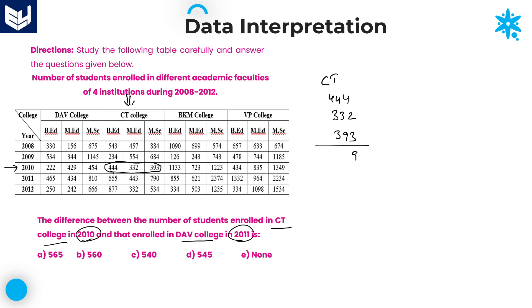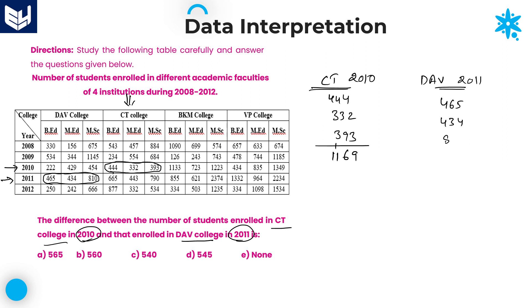Adding City college 2010: 444 plus 332 plus 393. Units: 4 plus 2 plus 3 is 9; tens: 4 plus 3 plus 9 is 16, carry 1; hundreds give 1169. This is City college 2010 total. Then DAV college 2011 — that is the fourth year. Adding 465, 434, and 810 for DAV college 2011.